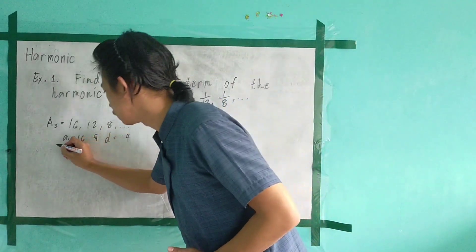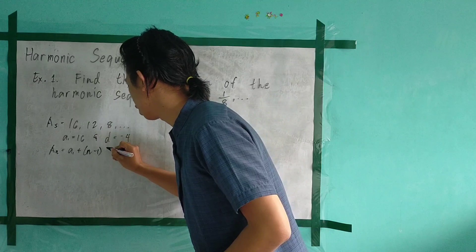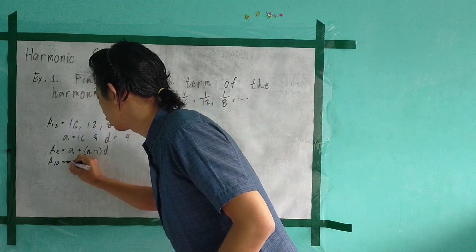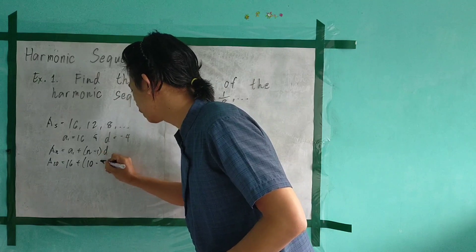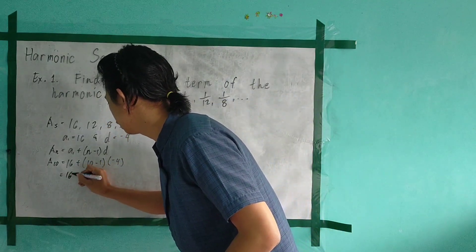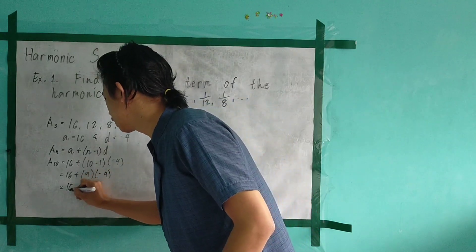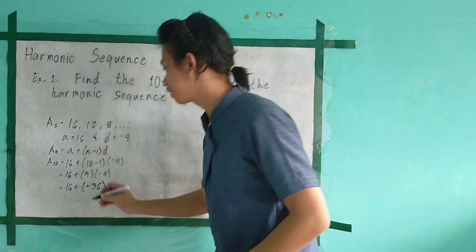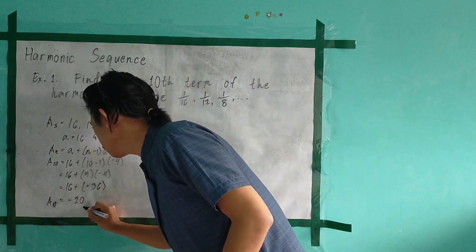Using the formula of an arithmetic sequence, A sub n is equal to A sub 1 plus (n minus 1) multiplied by the common difference. Substituting — since we are looking for the 10th term — A sub 10 is equal to 16 plus (10 minus 1) times negative 4. Simplifying: 16 plus 9 times negative 4 equals 16 plus negative 36, which equals negative 20. So the 10th term of the arithmetic sequence is negative 20.